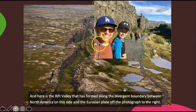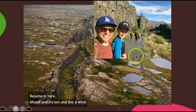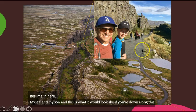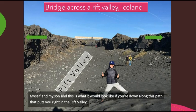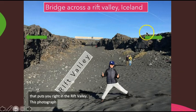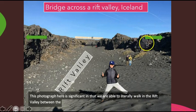And here is the rift valley that has formed along the divergent boundary between North America on this side and the Eurasian plate off the photograph to the right. We zoom in here, myself and my son, and this is what it would look like if you're down along this path that puts you right in the rift valley. This photograph here is significant in that we are able to literally walk in the rift valley between the North American plate and the Eurasian plate.